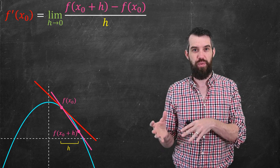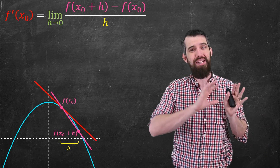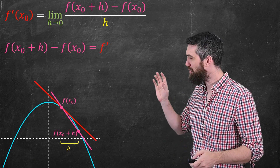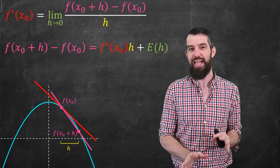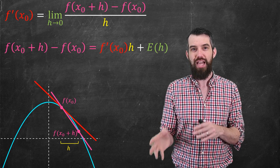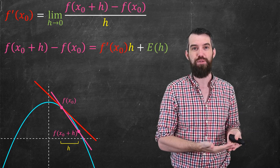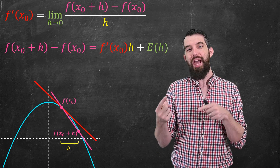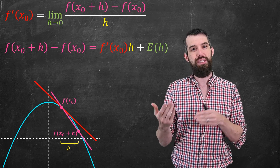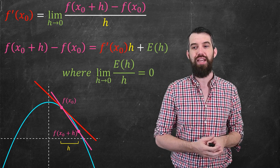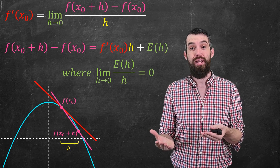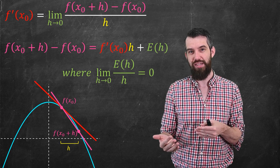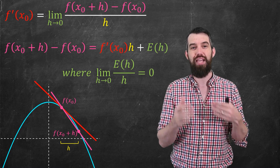That was one view of differentiability, probably the most common way it was presented. But I want to take a different view of differentiability of a single variable function. I'm going to take this limit expression and rearrange it slightly. First, I take the h on the bottom and multiply it up, so I have f prime of x0 times h. Then in place of a limit, I write e of h, which stands for an error term, with the condition that even when you divide out by h, that error term is so small that it goes to 0 as h goes to 0.